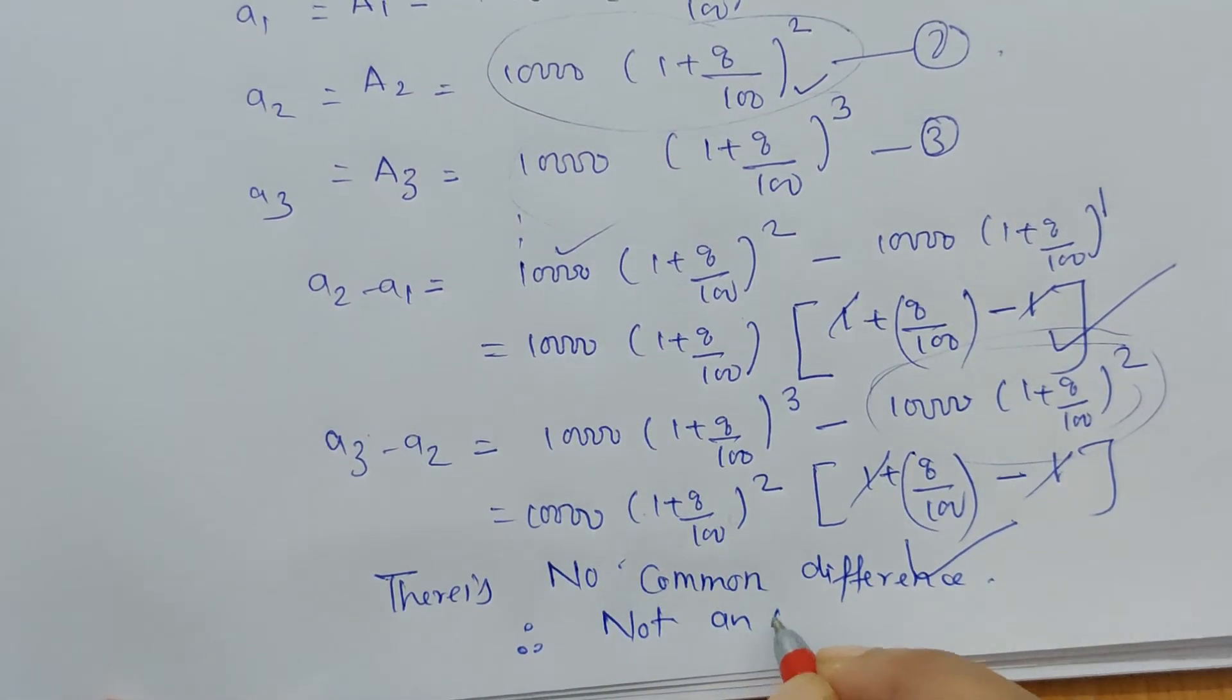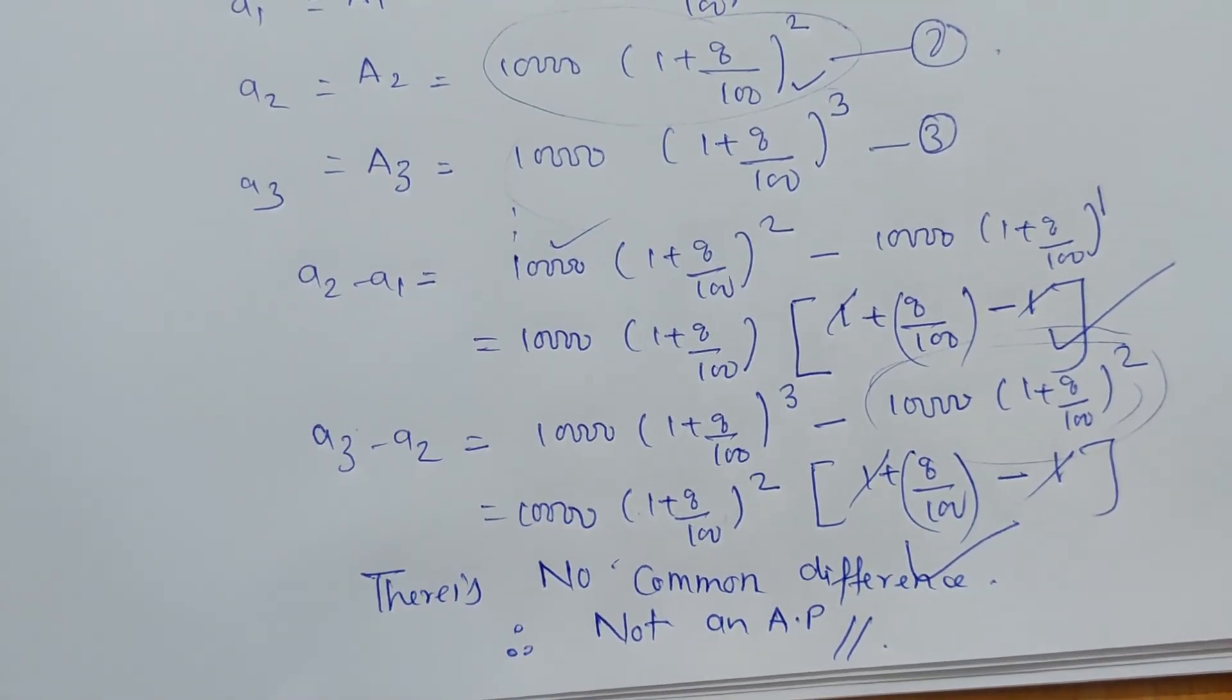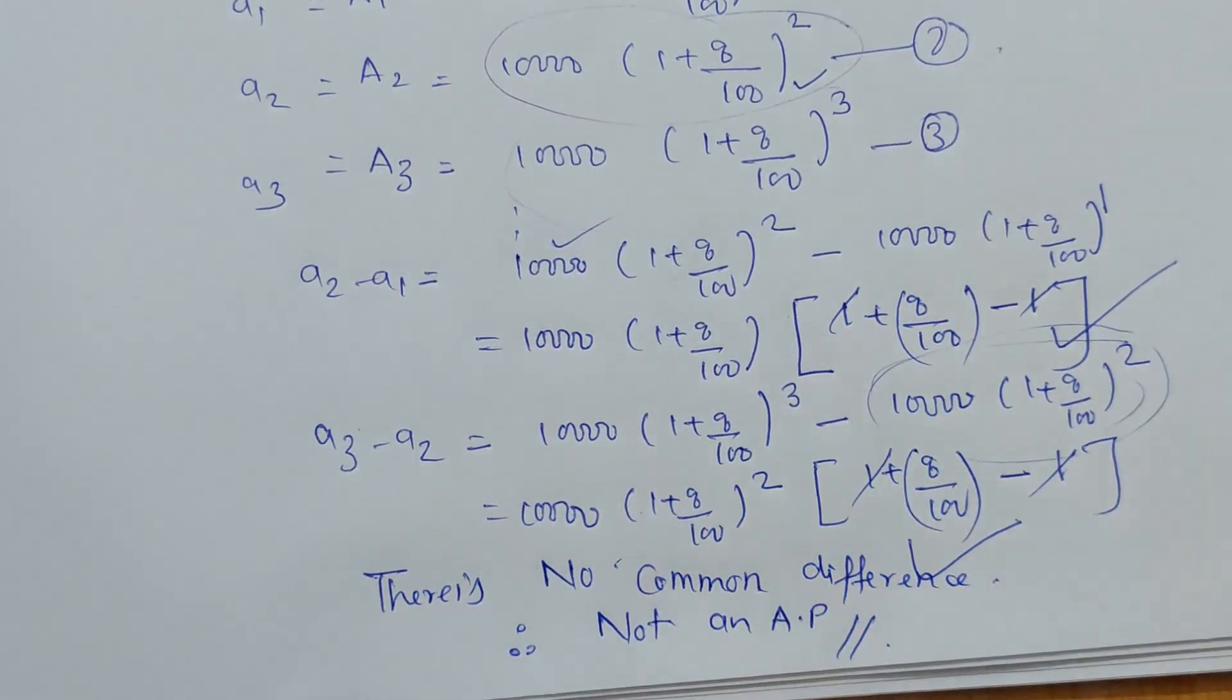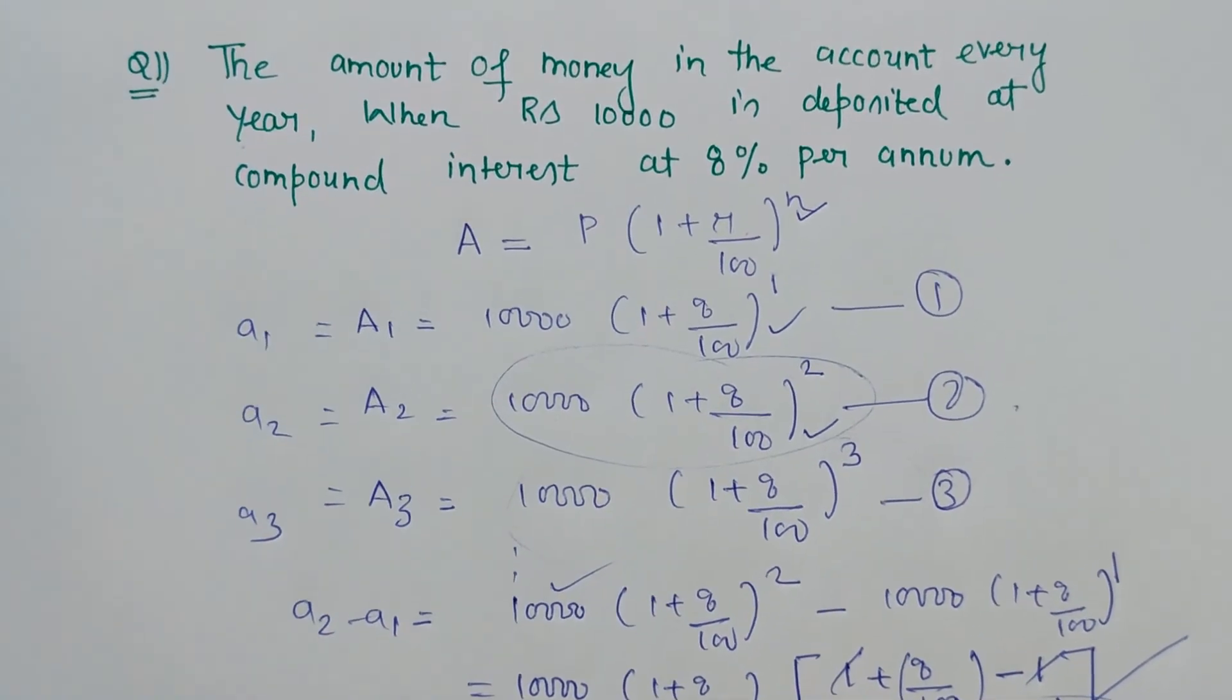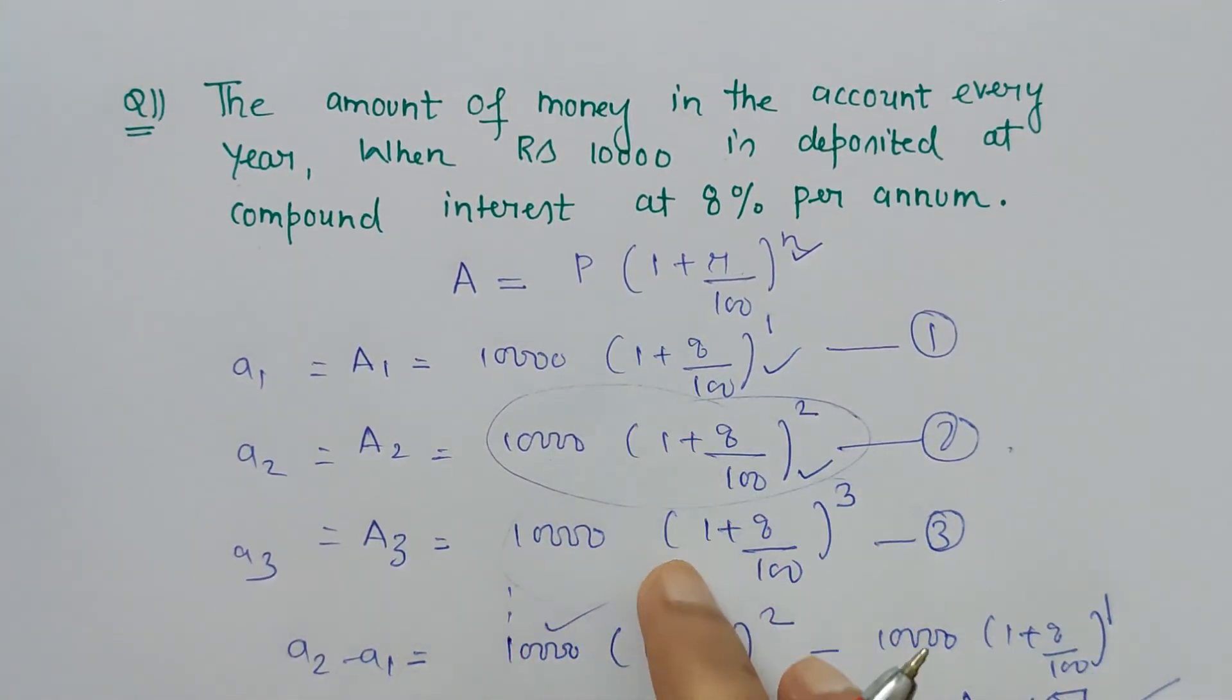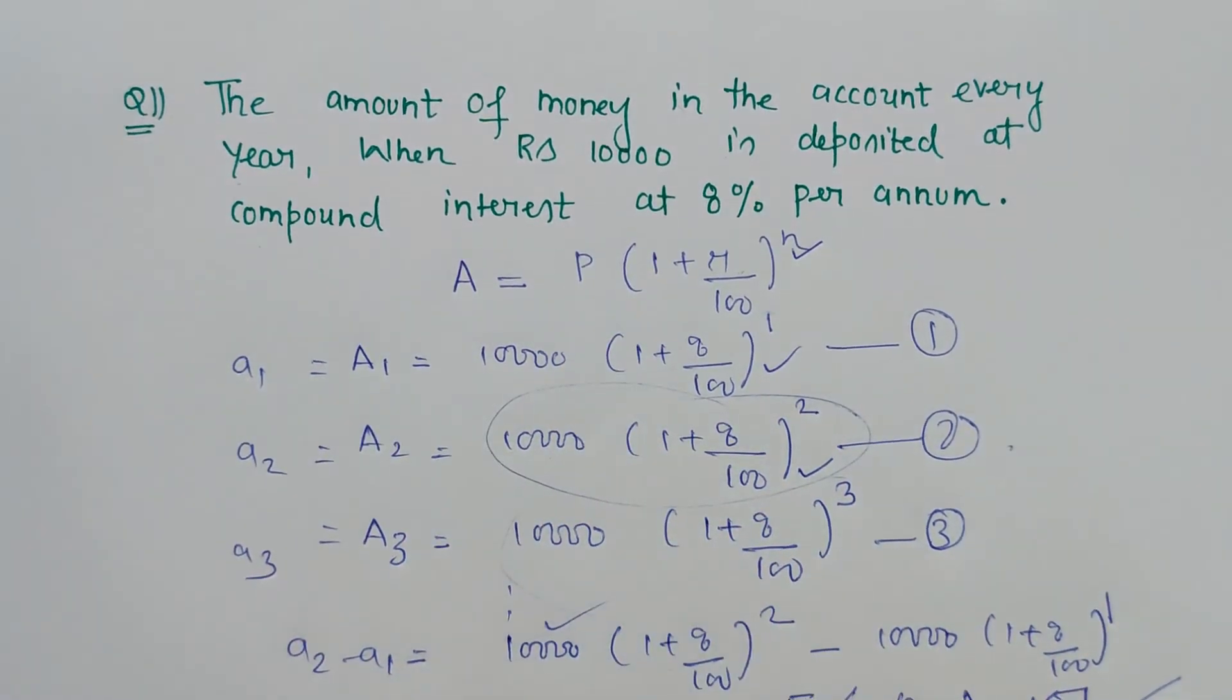it is not an AP. The sequence formed is not an AP. It is very simple—no need to show this much of explanation also. Directly, after writing the sequence as per the question, directly you can write: since it does not have any common difference, so it is not forming an AP,